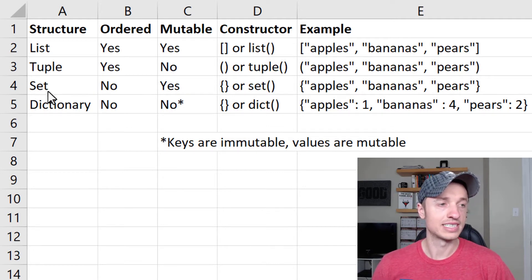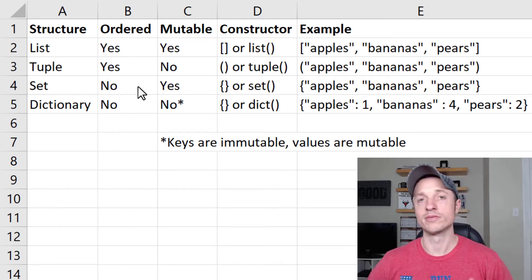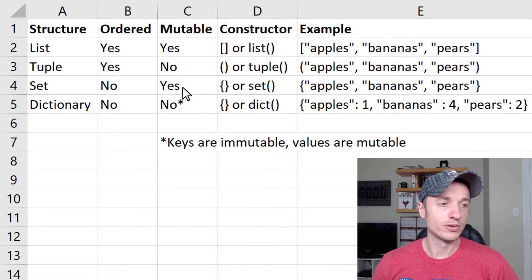The next structure we have are sets. Now sets are not ordered, which means if you print a set, like every time you print it, it's going to be in a different order. It doesn't matter. Sets are very useful for removing duplicate values as well.